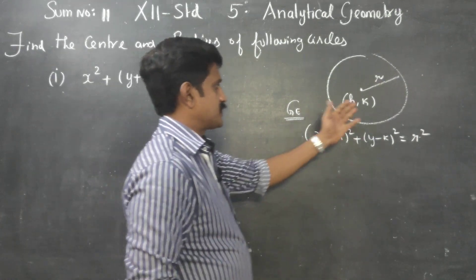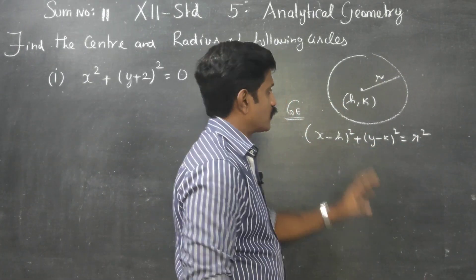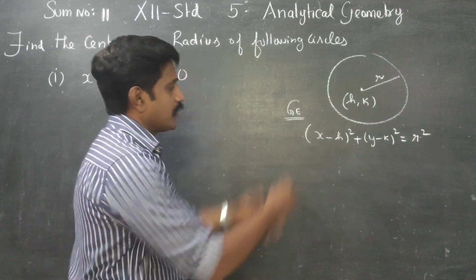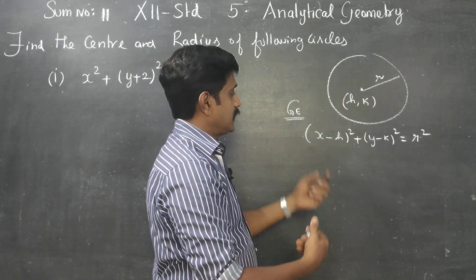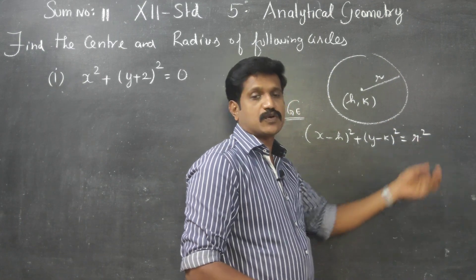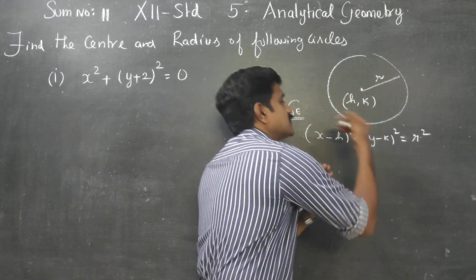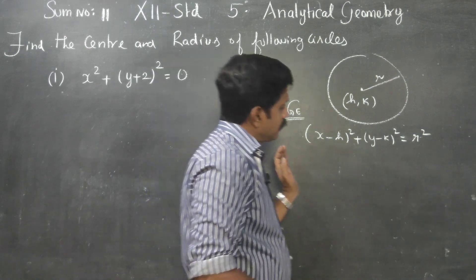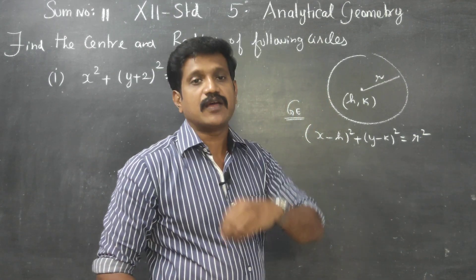If you substitute h and k, you will find the equation of a circle. This is one format. If you simplify this, (a-b)², and arrange everything in order, we get another general equation: x² + y² + 2gx + 2fy + c = 0.